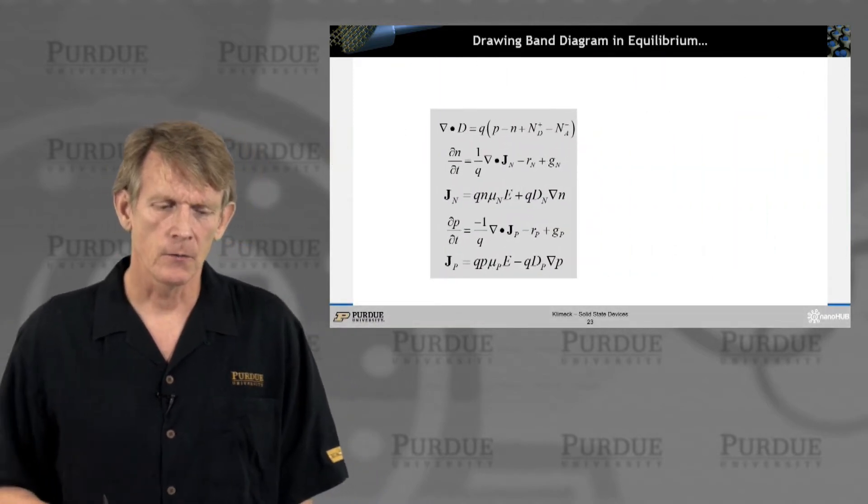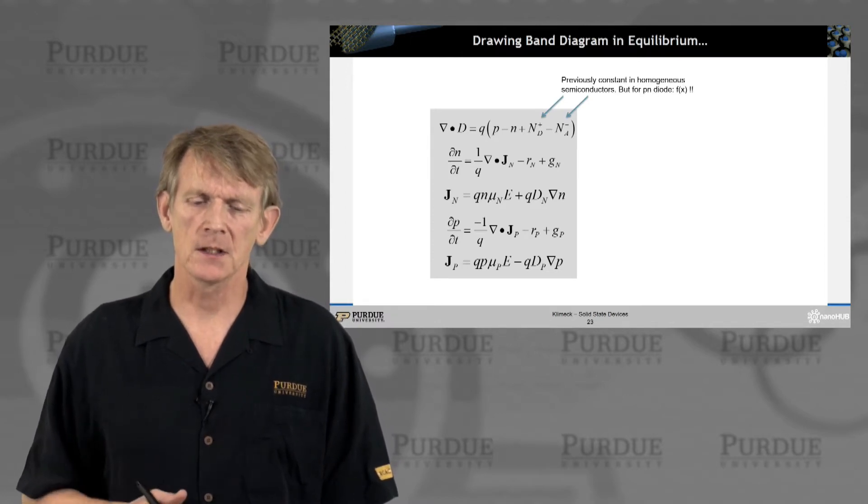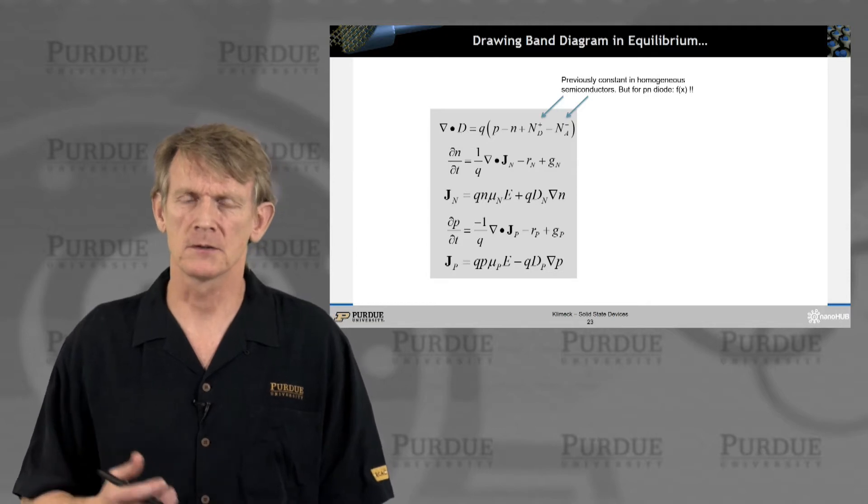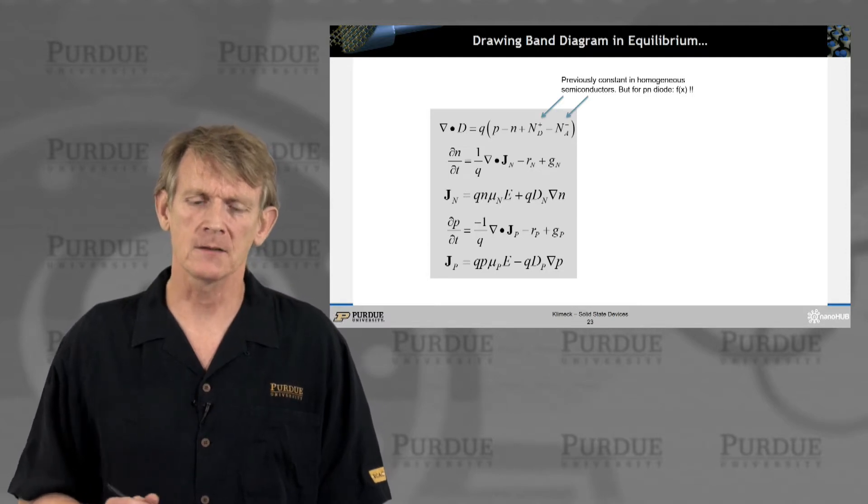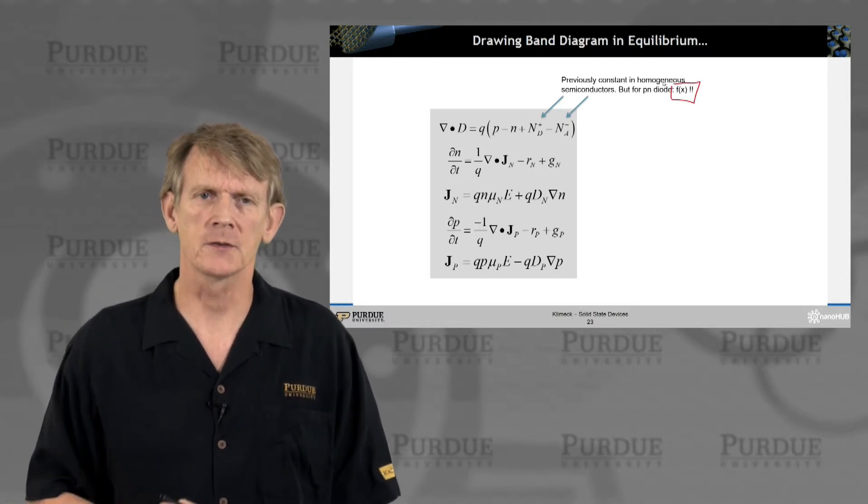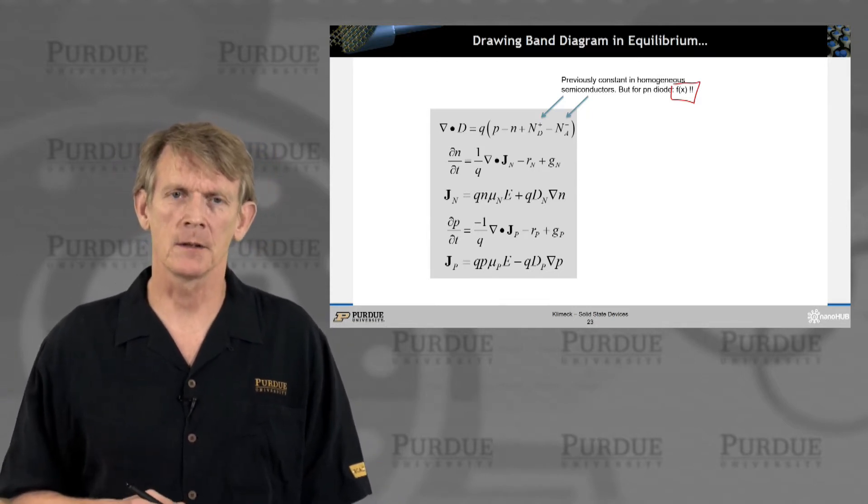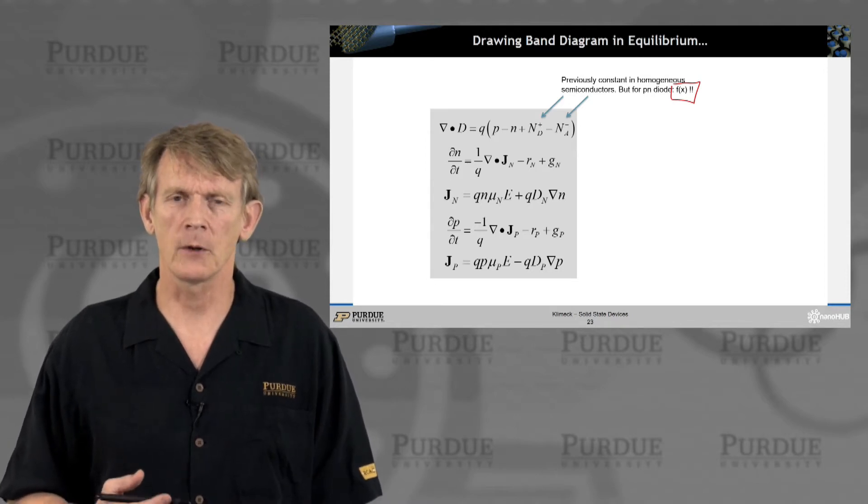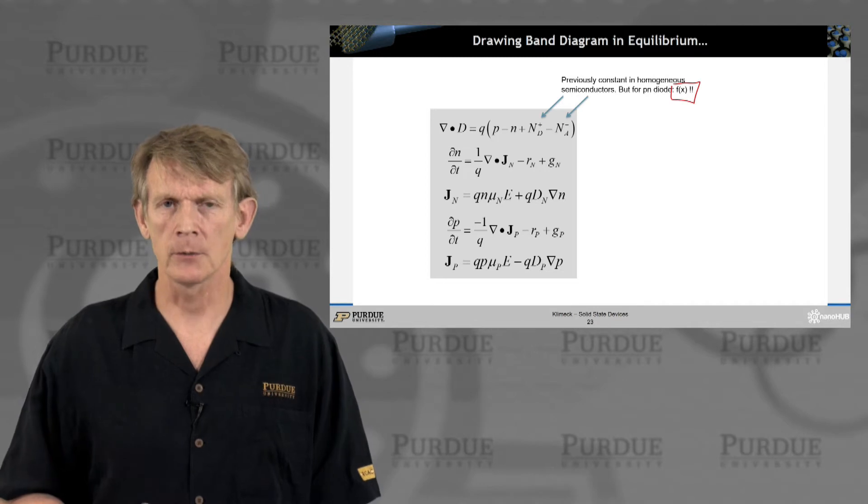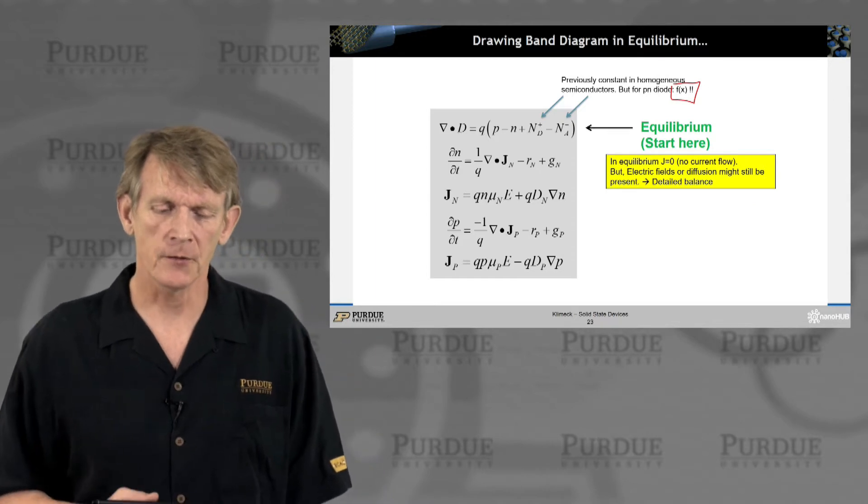So let's draw a band edge diagram in equilibrium. In previous calculations we always assumed the doping was constant in space, but now it becomes a function of space. We'll do this here in one dimension. Of course you can do this in multiple dimensions, and then you tend to do this on a computer. But even if you had a three-dimensional device, you will always end up wanting to plot these band edge diagrams probably as line plots cut through a multidimensional space.